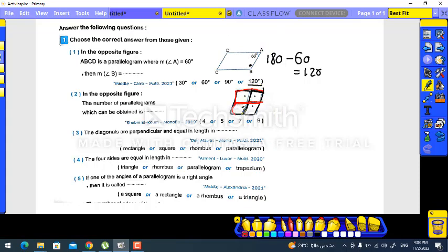So the answer will be nine. Question three: the diagonals are perpendicular and equal in length in what shape?